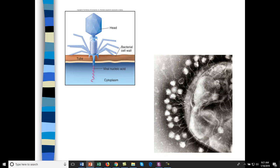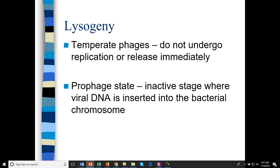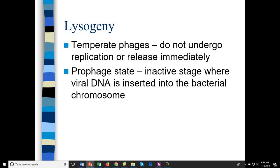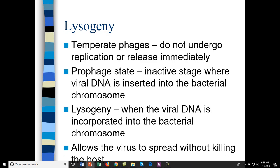Here's phage infecting E. coli — you can see not only have many phage infected this cell, but there are phage forming within E. coli that will be liberated once the cell bursts. A lysogenic state is for phages that don't necessarily undergo replication or release immediately — they just inject their DNA and that DNA becomes a portion of the bacterial chromosome. We call that a prophage. A prophage or lysogenic state allows the virus to spread without killing the host cell.